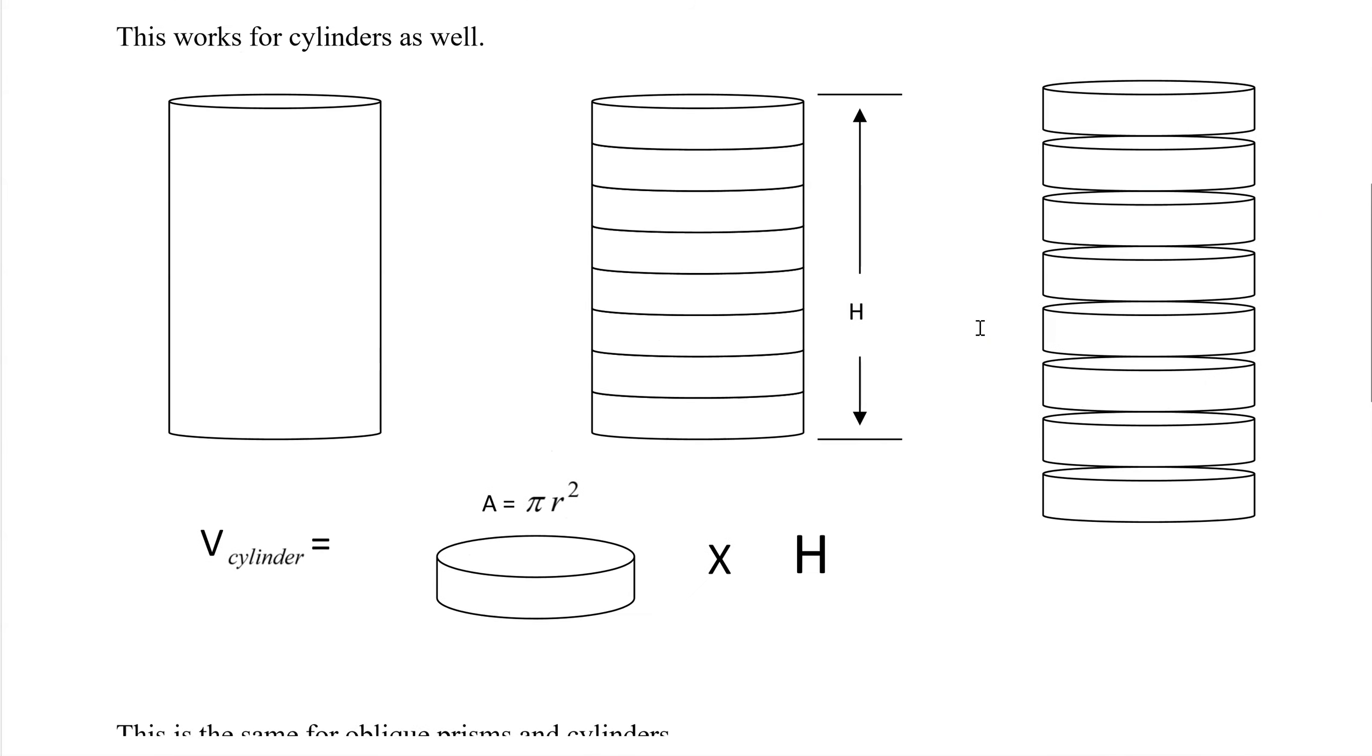So it works the exact same way with the cylinder. The area of the base here is π r squared. And then it's times the height. So if we did π r squared times 1, then that right there would give us our volume. And then the height tells us how many of these we have. So here we have 1, 2, 3, 4, 5, 6, 7, 8. So there would be 8 of them here.